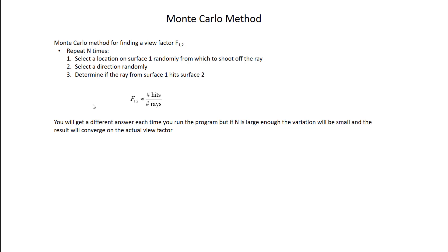You'll get a different answer every time you run the program because of the randomness, but if you make N large enough the variation becomes small and your result converges on the actual view factor. This is like a numerical technique — an approximate solution that closes in on the actual solution. As an engineer you have to decide whether N is large enough, and that's a judgment call about how close to the actual view factor you need to be.